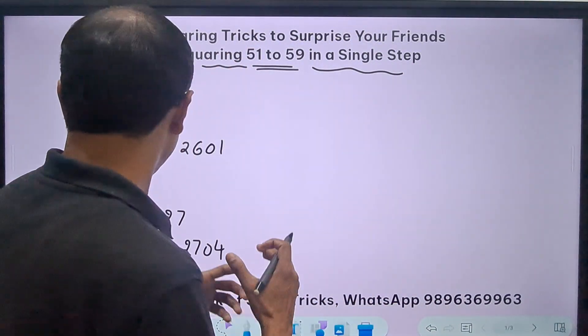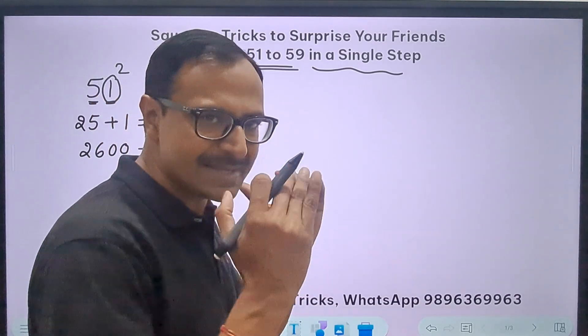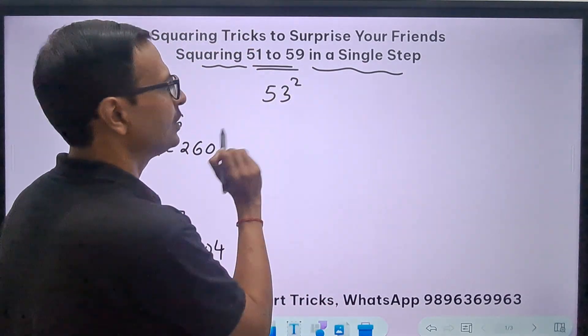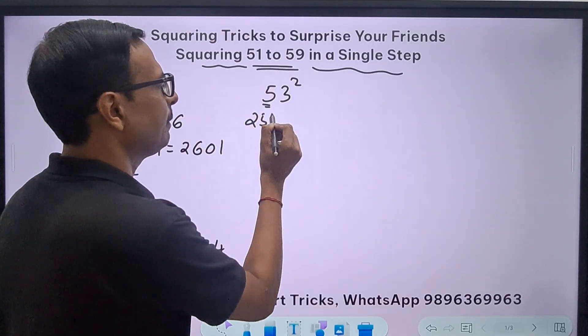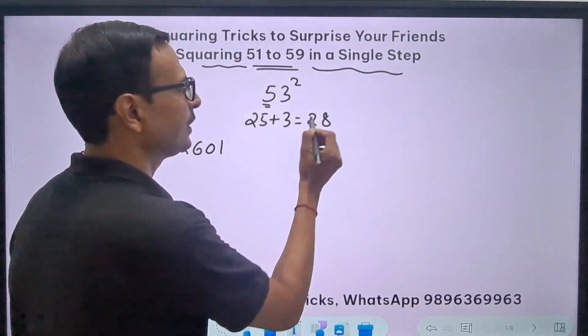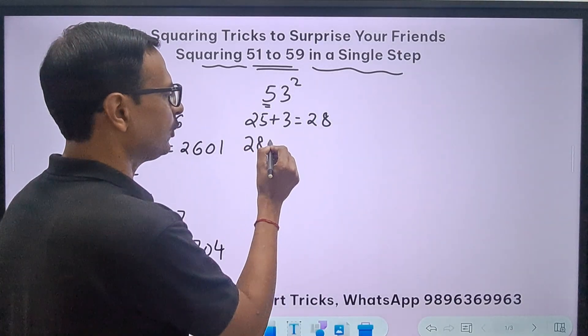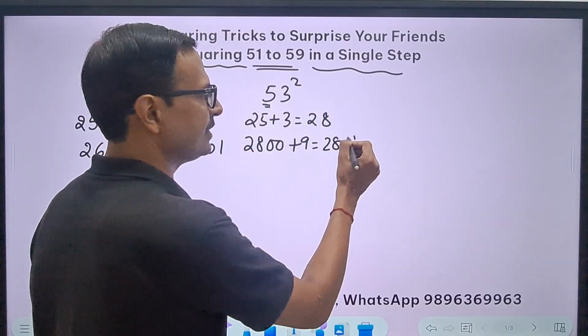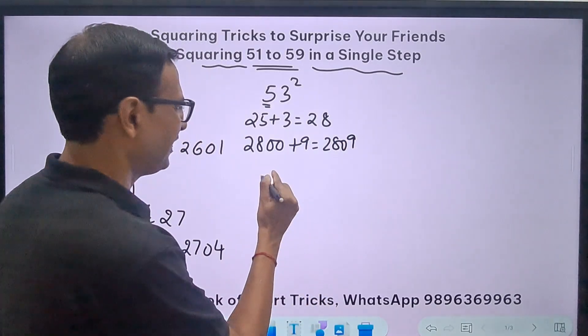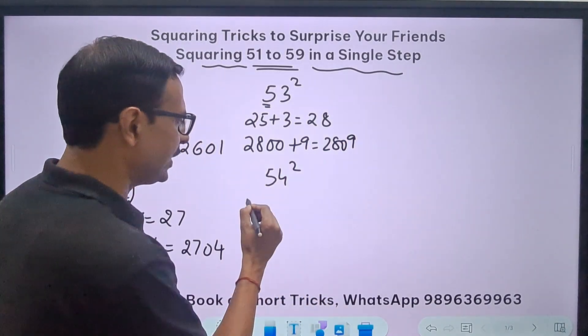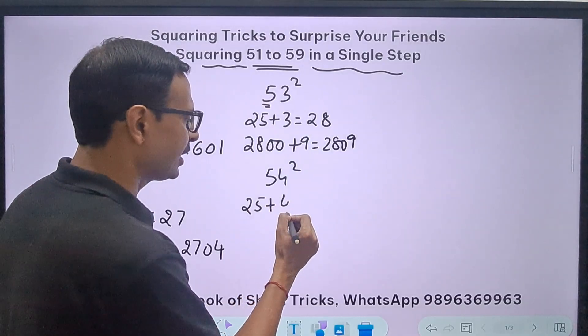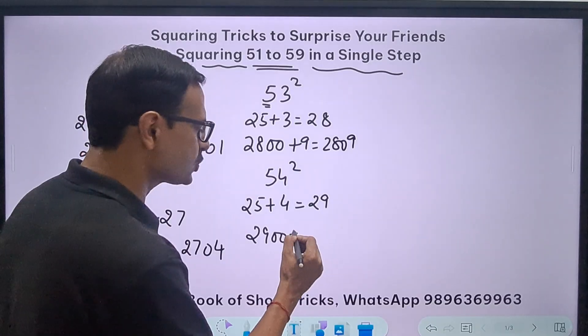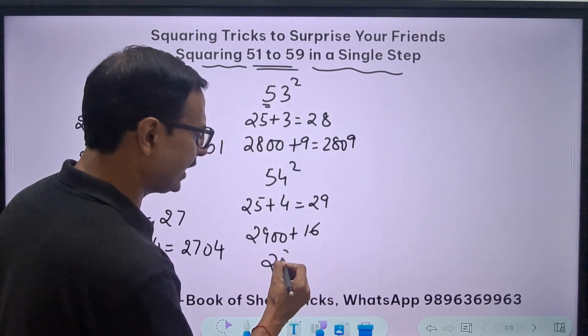Likewise you can go on and find all these squares up to 59. So let's skip the steps now and solve it in lesser amount of time. If we have 53 square, so I will do 25 plus this number 3, that gives me 28, so 28 followed by 2 zeros and 3 square is 9, gives me 2809. 54 square: 25 plus 4 is 29, so 2900 and 4 square is 16, so 2916 is the square of 54.